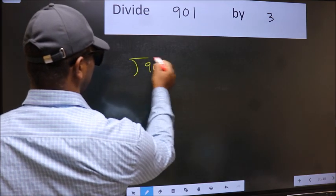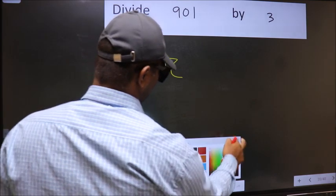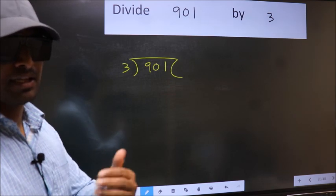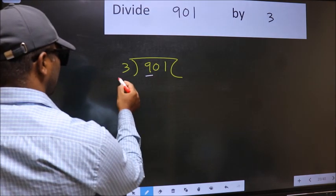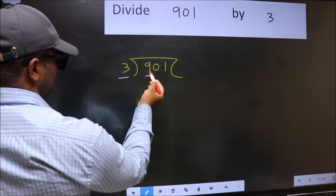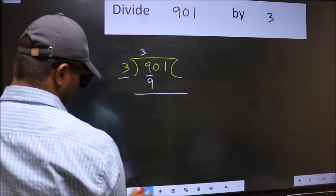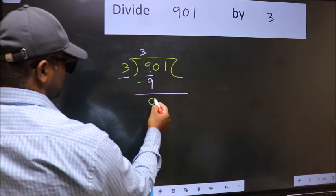901 and 3 here. This is your step 1. Next, here we have 9 and here 3. When do we get 9 in 3 table? 3 times 3 is 9. Now we should subtract. 9 minus 9, 0.